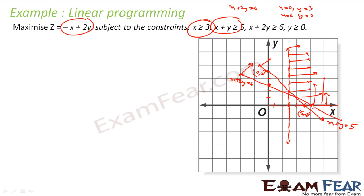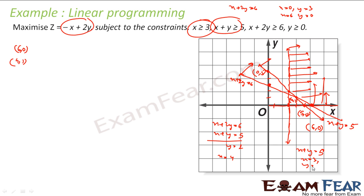The corner points are: (6, 0) is one point. The second point is the intersection of x + 2y = 6 and x + y = 5. Subtracting gives y = 1 and x = 4, so (4, 1) is the second point. The third point is the intersection of x + y = 5 and x = 3, giving y = 2, so (3, 2) is the third point. These are the three corner points.